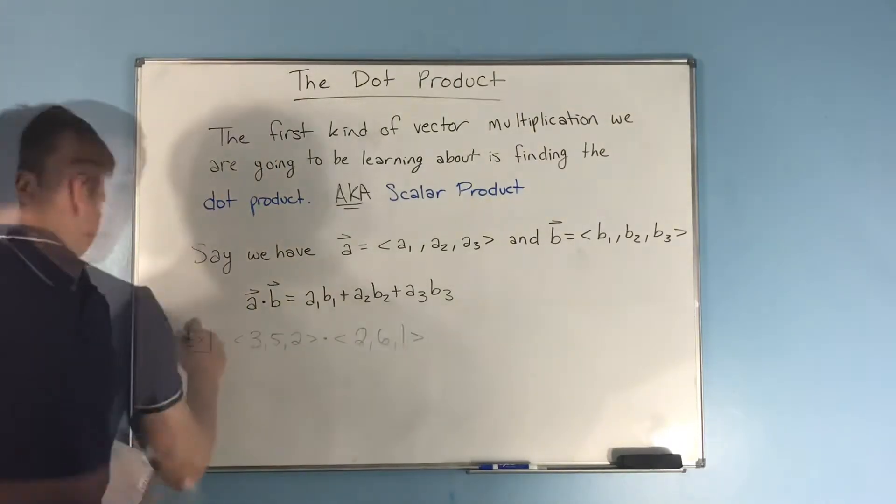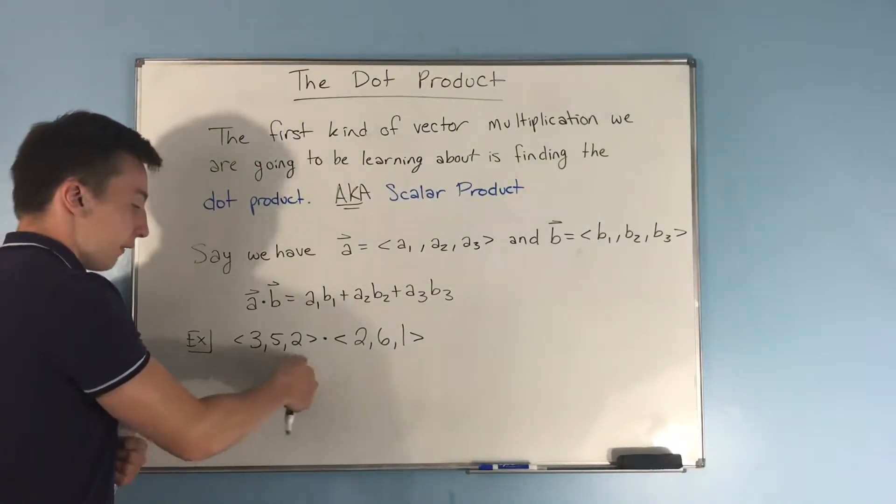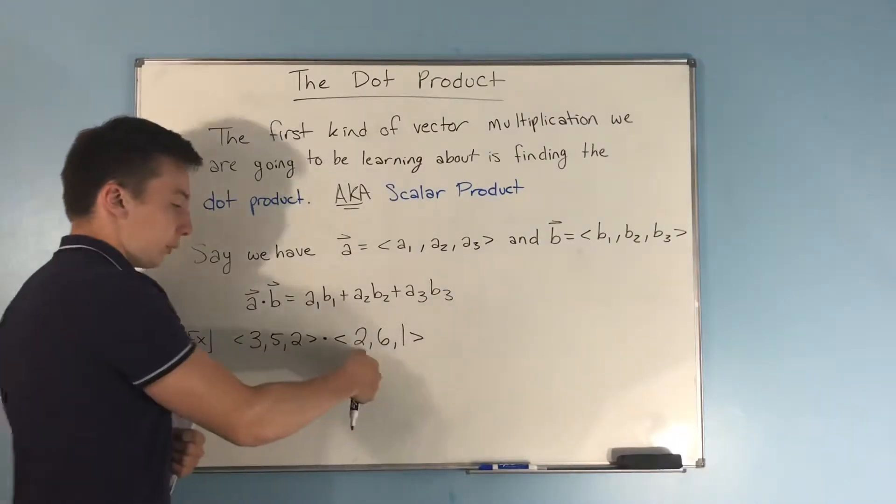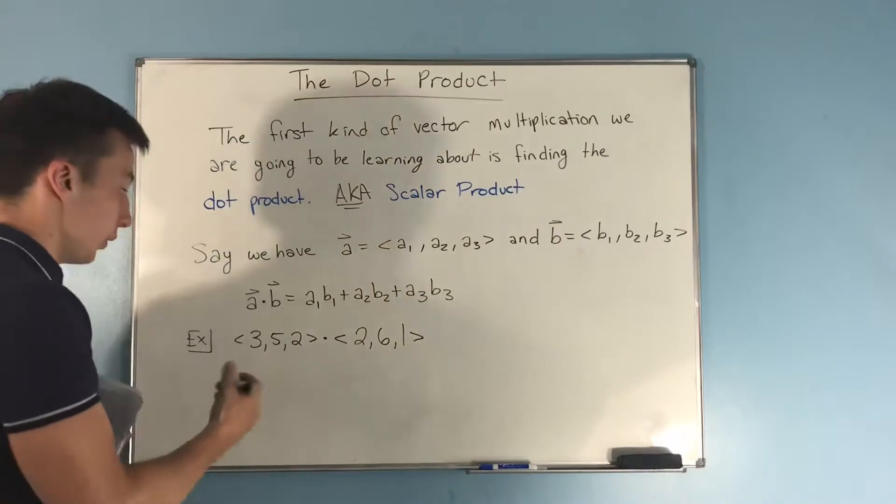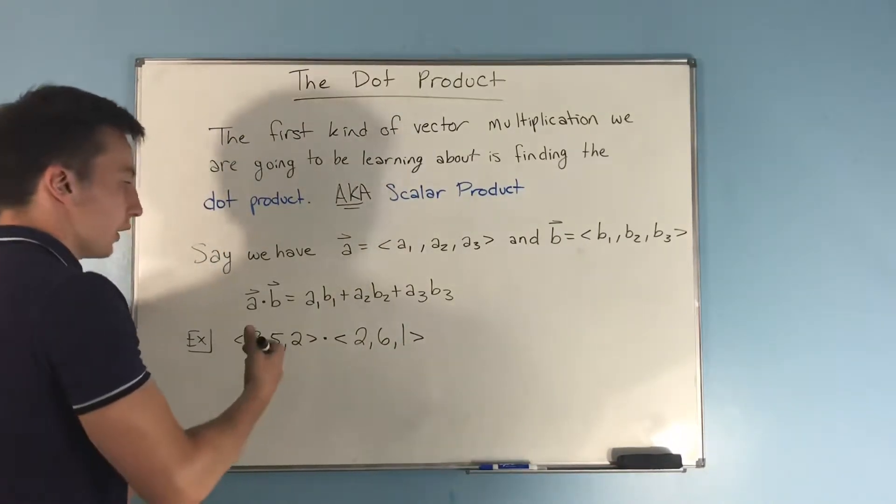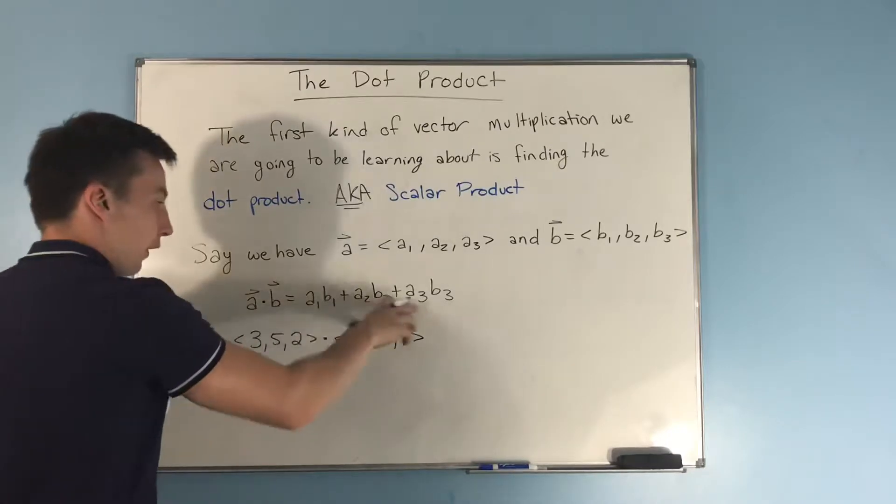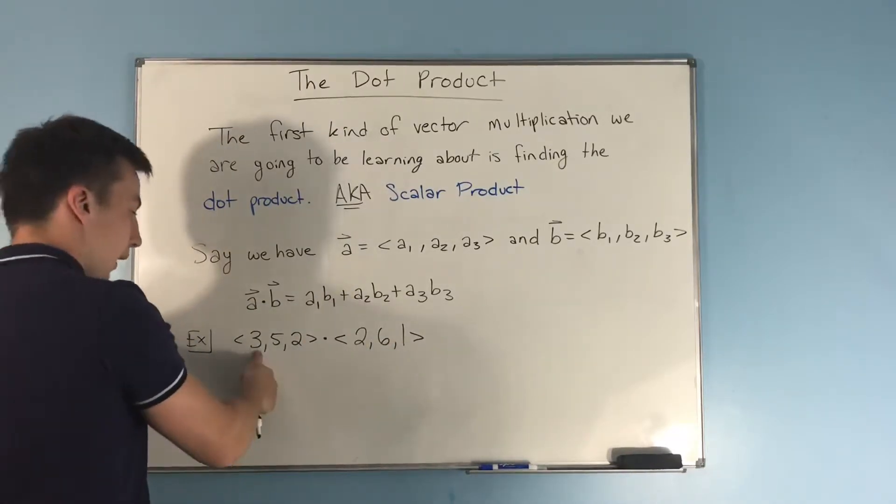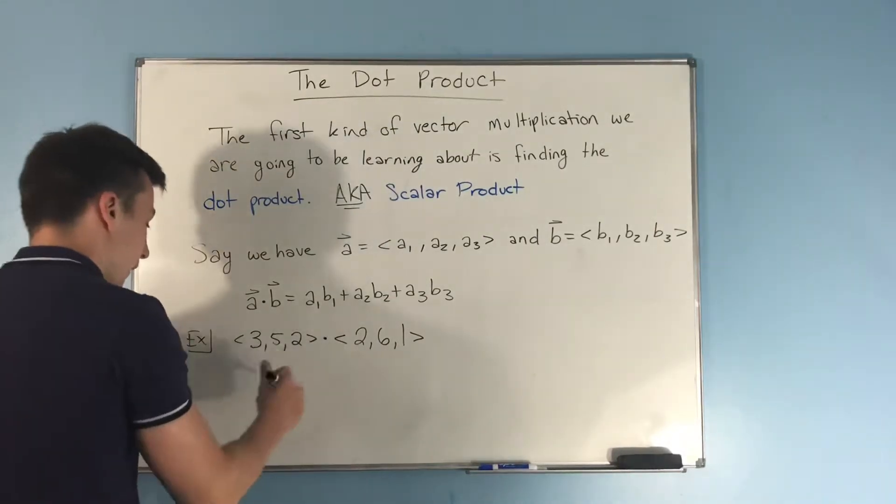Let's do a quick example. We want to dot the vector <3, 5, 2> with <2, 6, 1>, and we need to find the dot product. Now we start by following this formula - we multiply the first two components together: 3 times 2.